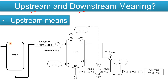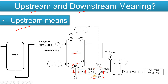Let's discuss the meaning of upstream. I'll take an example using P-001, which is a pump. Please let me know in the comments what type of pump this is based on the P&ID symbol. Here you can see there is tank T-001, with the N3 nozzle, and this is the suction line of the pump. There is one valve — this is the butterfly type valve. The P&ID symbol of the butterfly valve looks like this. And this is your pump.